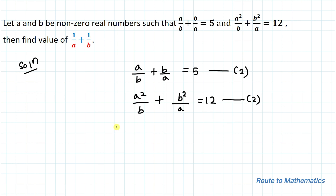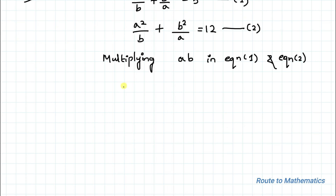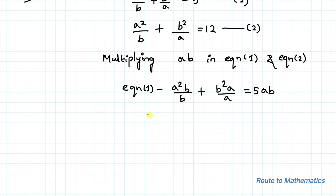Now I am going to multiply ab in both equation 1 and equation 2. Multiplying ab in equation 1, we get a²b/b + b²a/a = 5ab. Here b cancels out and a cancels out, so we have a² + b² = 5ab. Let us take it as equation 1a.